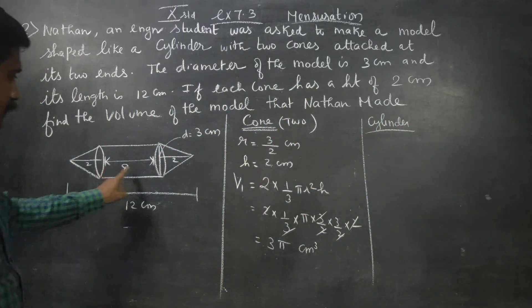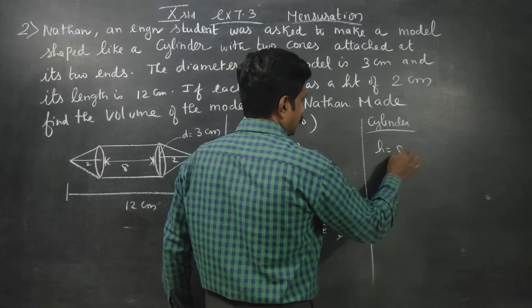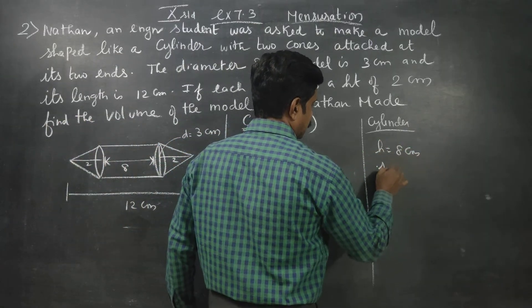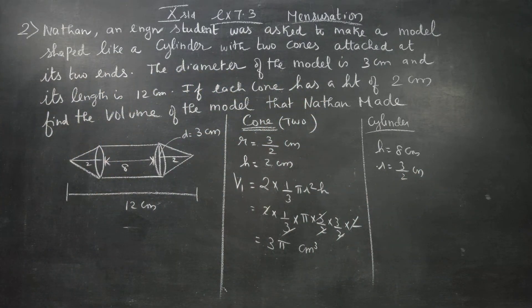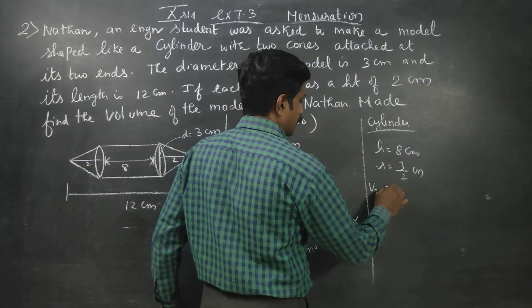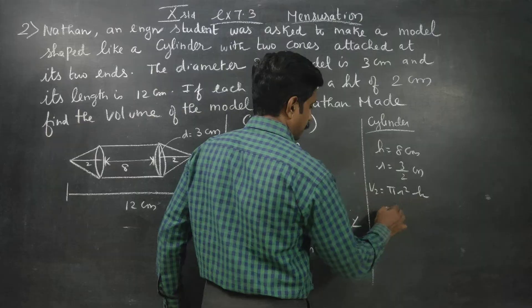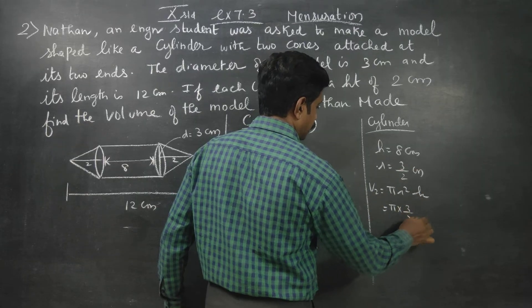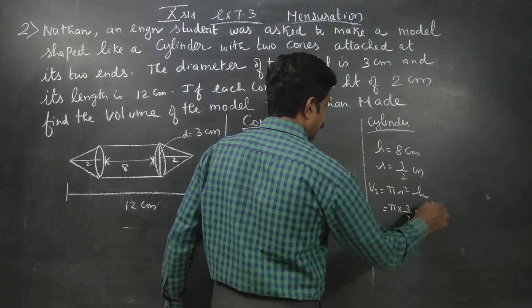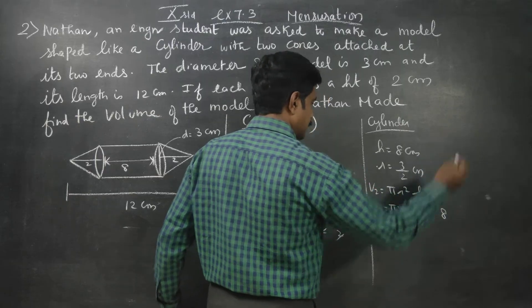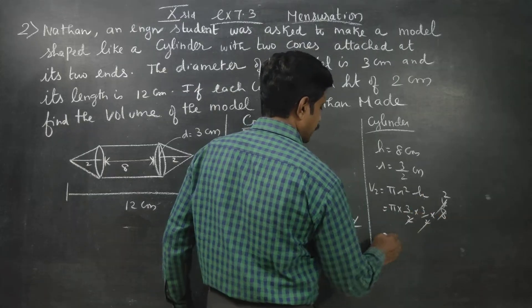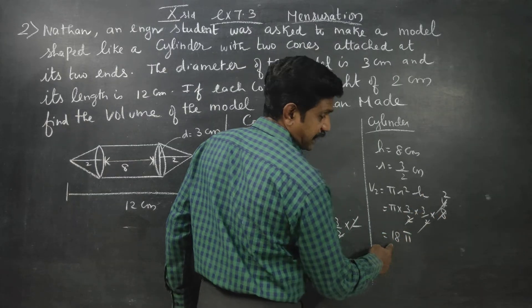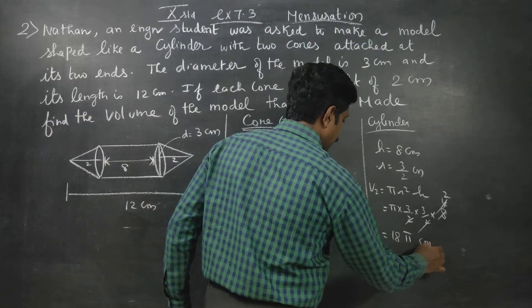Now for the cylinder: height is 8 centimeters and radius is 3 by 2. Volume of cylinder equals πr²h, that is π × (3/2) × (3/2) × 8. Simplifying: π × 9/4 × 8 equals 18π. Using 22/7, we can compute the value in centimeters cubed.